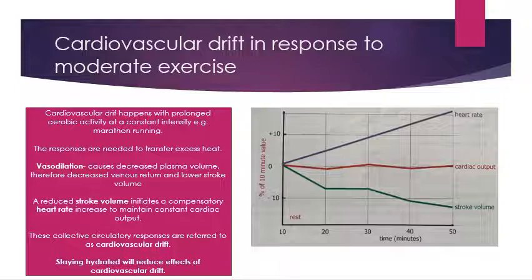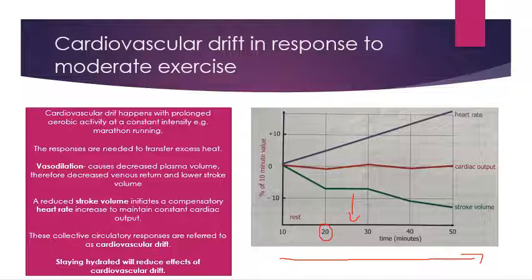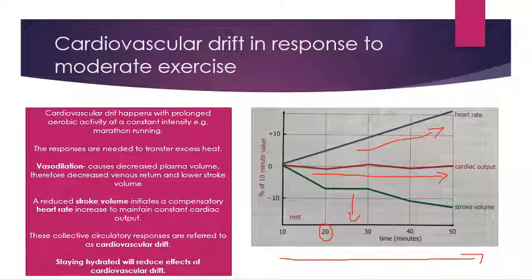Applying this to the graph: over time during prolonged aerobic exercise, after about 20 minutes the drift becomes clear. The green line — stroke volume — starts to decrease significantly. As a result, the blue line — heart rate — shifts constantly upward. These two changes effectively cancel each other out, so cardiac output, the amount of blood pumped out per minute, stays roughly the same throughout.